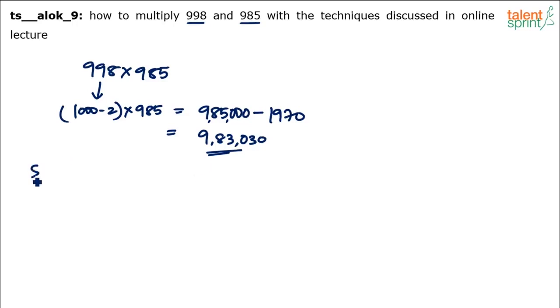There's one more way of doing it. This is using split and merge. What's the other way of doing it? Both the numbers, if you observe, 998 and 985 are closer to 1000. I am not going to explain this technique in detail. You can watch the speed math video. But based on that technique, what happens? Very simple.